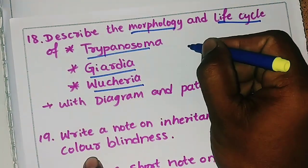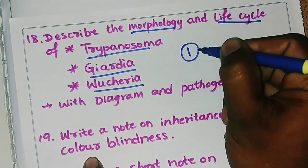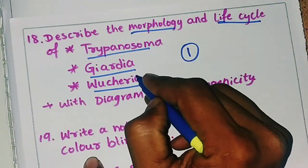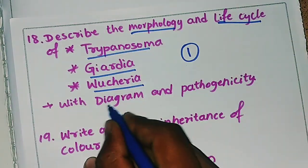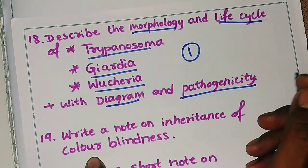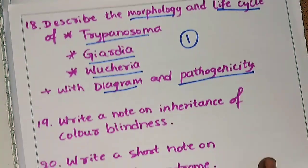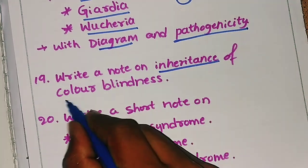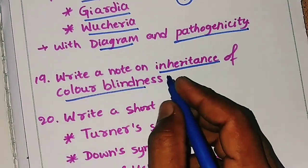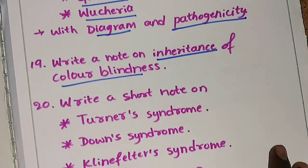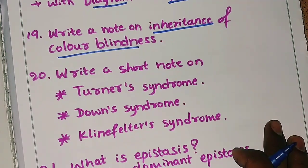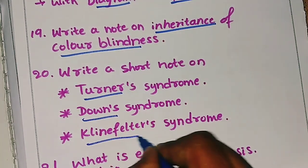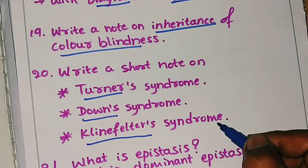They will ask about Trypanosoma, Giardia, or Wuchereria — describe the morphology and life cycle with diagram and pathogenicity. The nineteenth question is: write a note on inheritance of color blindness — how it passes from one generation to another. The twentieth question is: write a short note on Turner syndrome, Down syndrome, and Klinefelter syndrome.